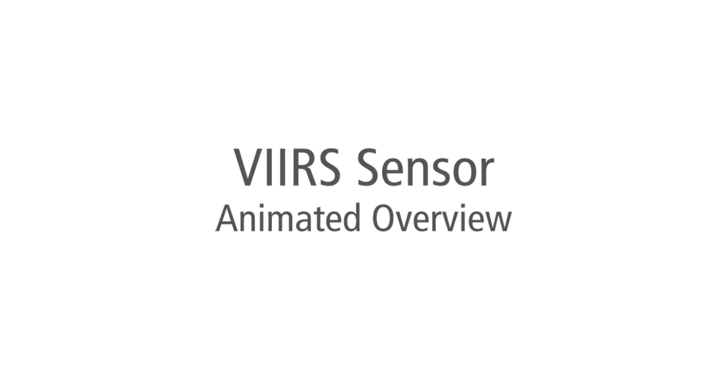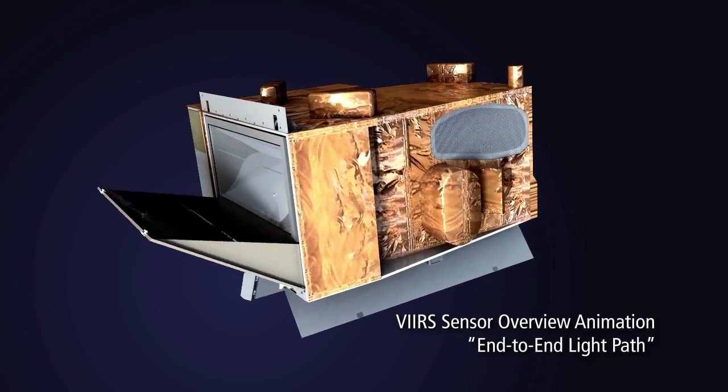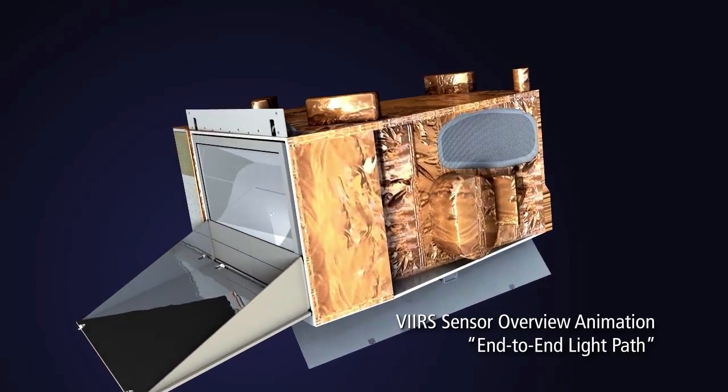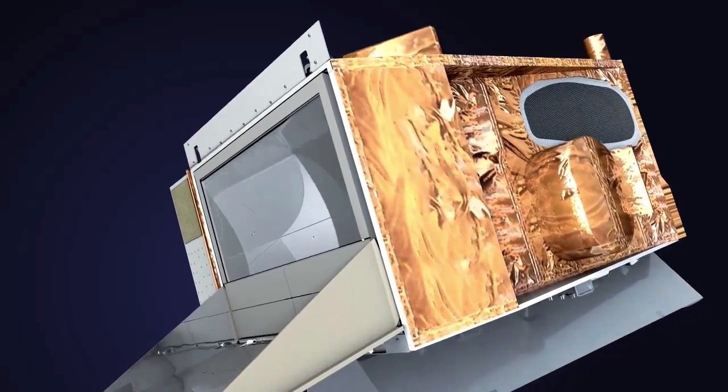Let's follow the photon path through the VIRS sensor. It begins with the opening of the cryo-cooler doors to cool the sensors to very low temperatures, which reduces detector noise and improves instrument sensitivity.